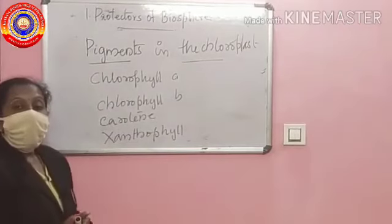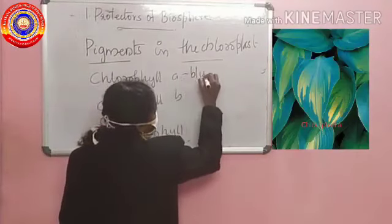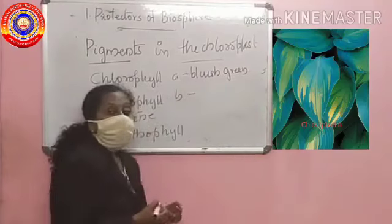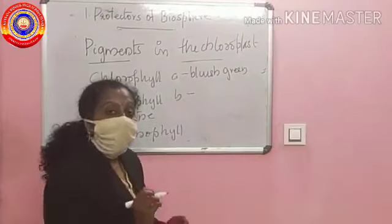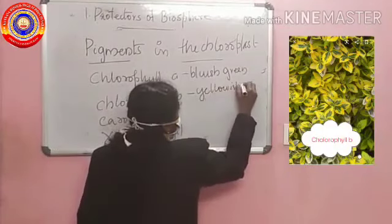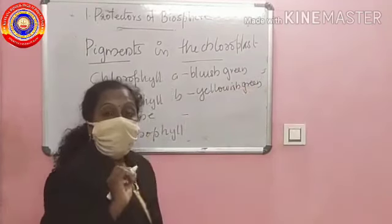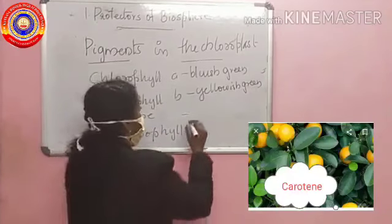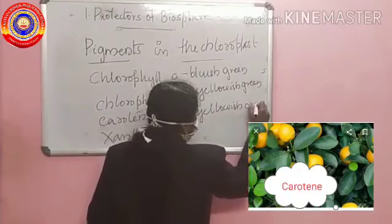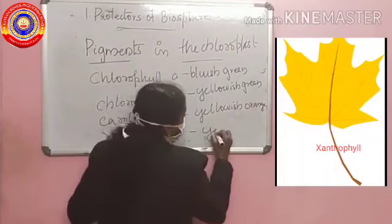Chlorophyll A imparts bluish green in colour. Chlorophyll B imparts yellowish green. Carotene imparts yellowish orange. And xanthophyll imparts yellow in colour.